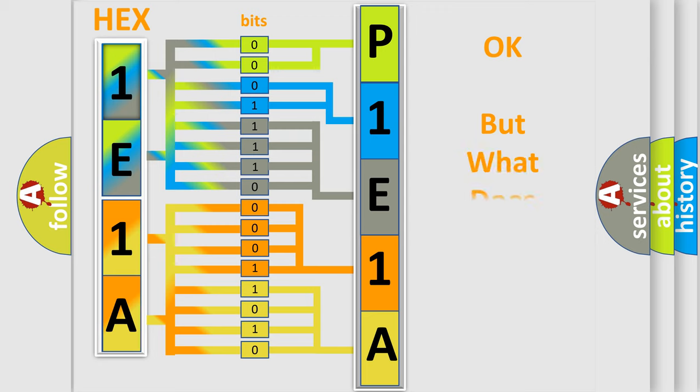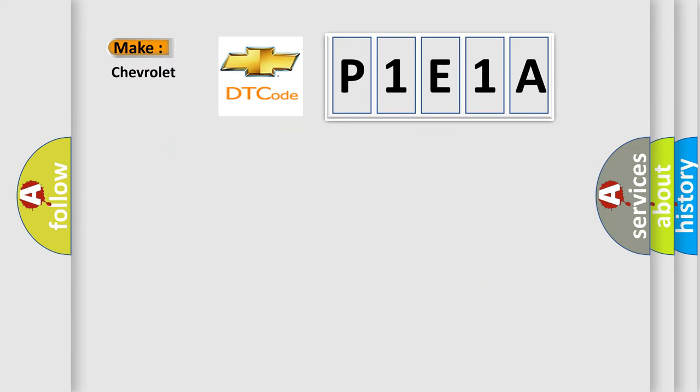The number itself does not make sense to us if we cannot assign information about what it actually expresses. So, what does the diagnostic trouble code P1E1A interpret specifically for Chevrolet car manufacturers?